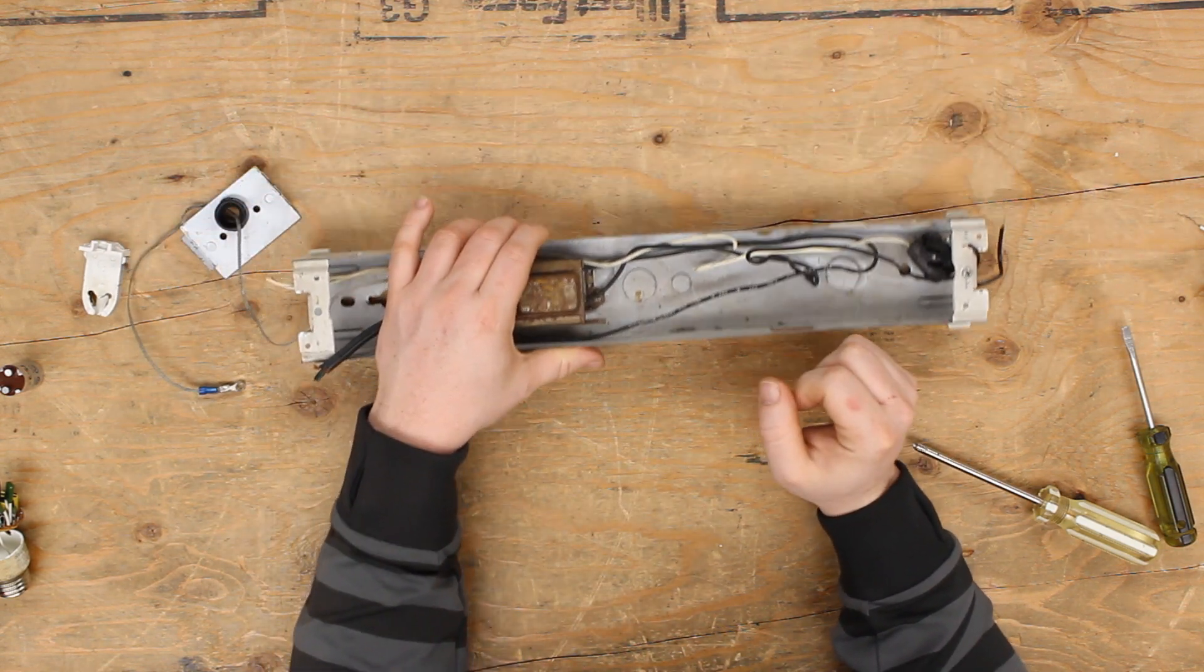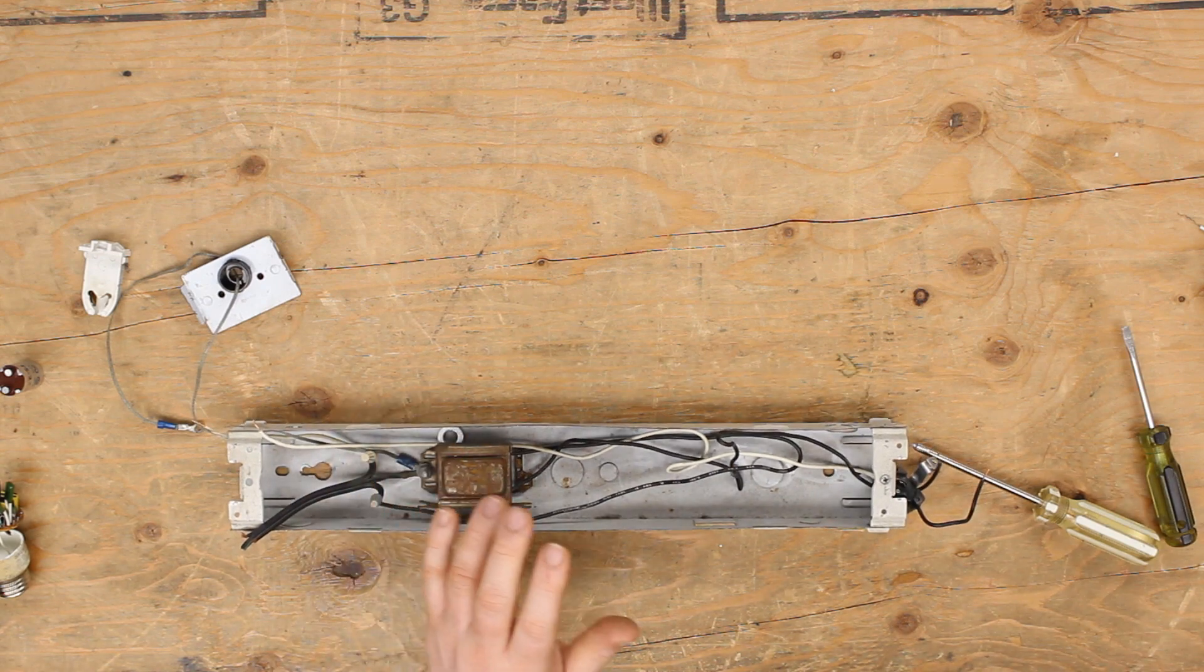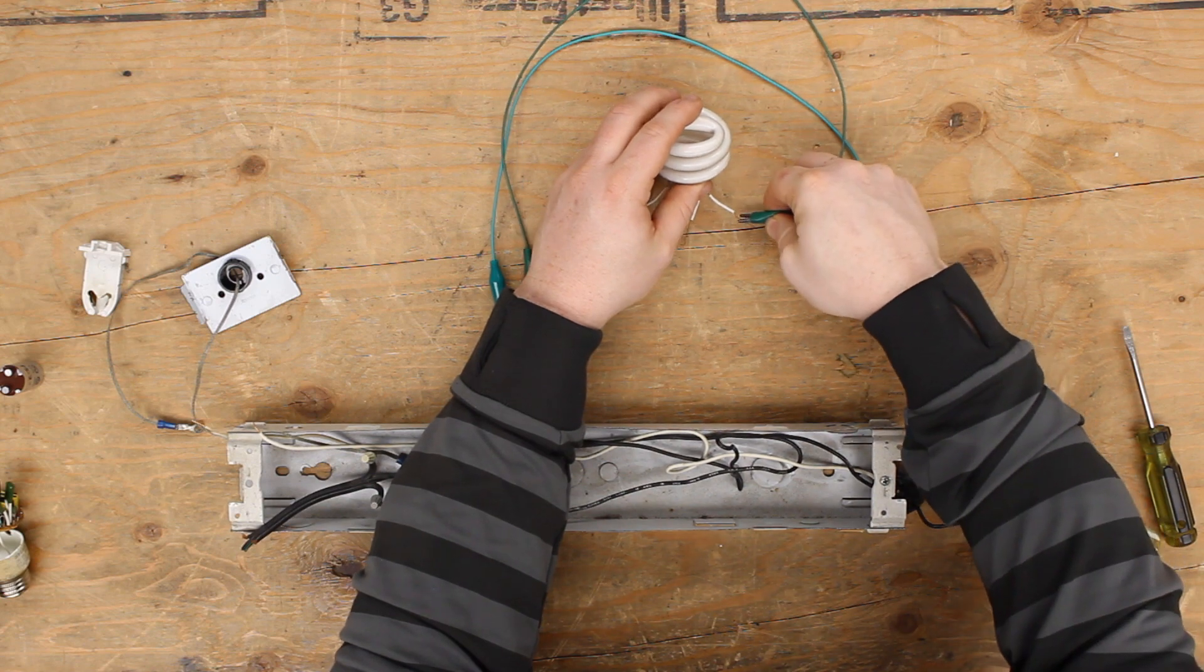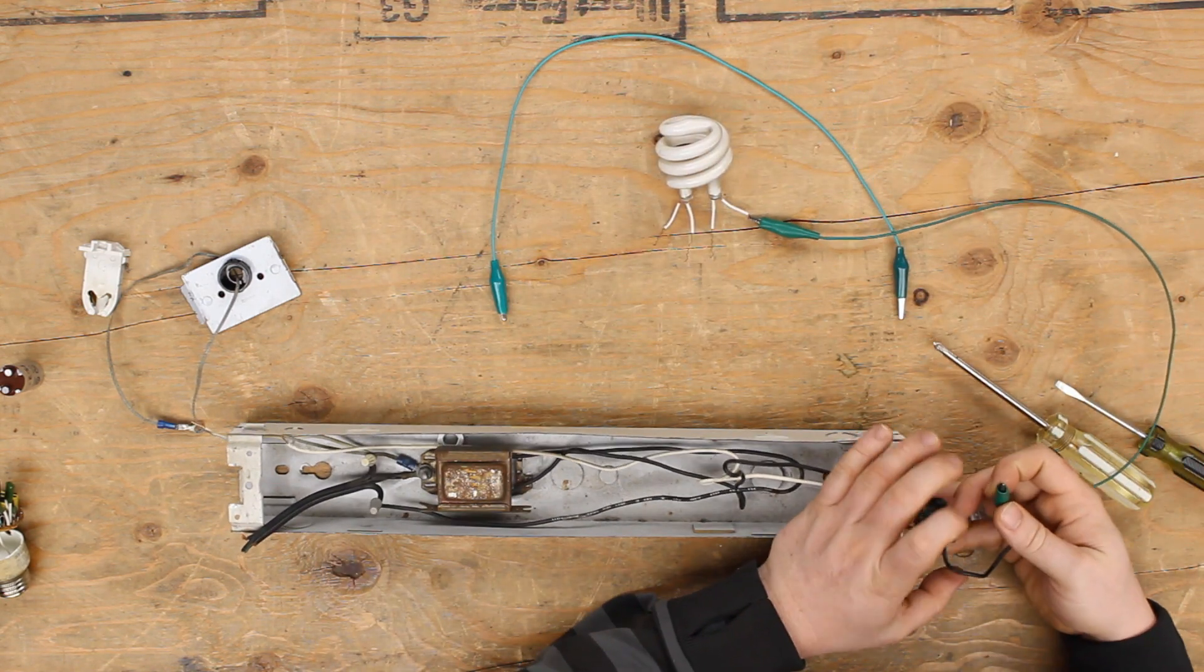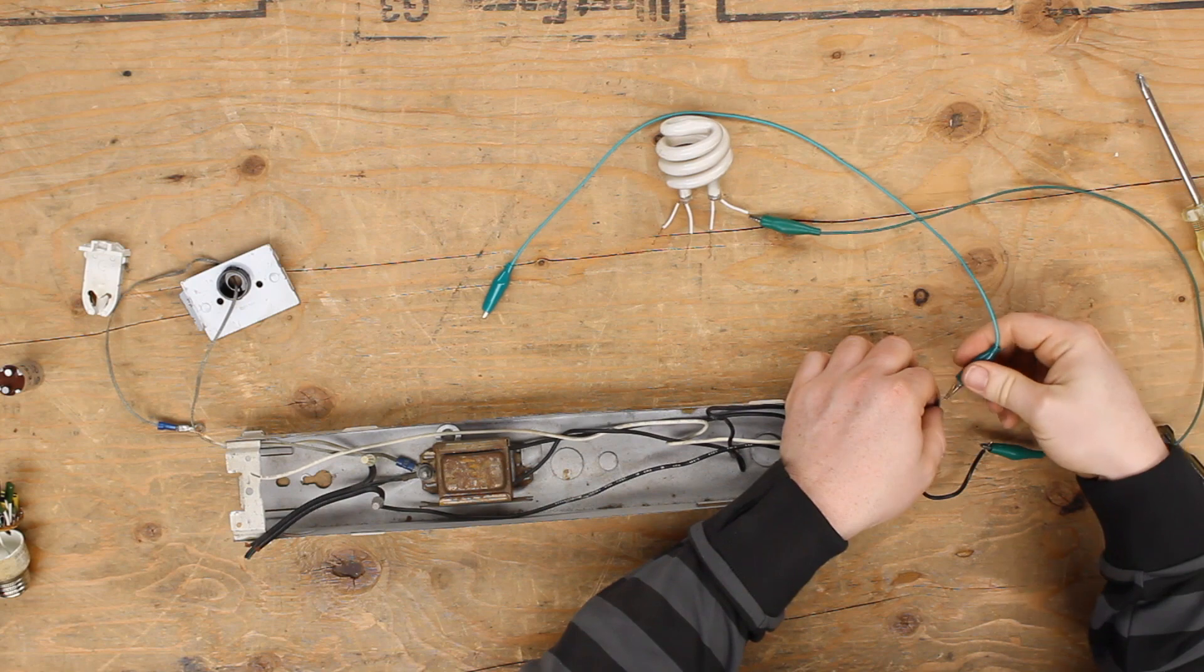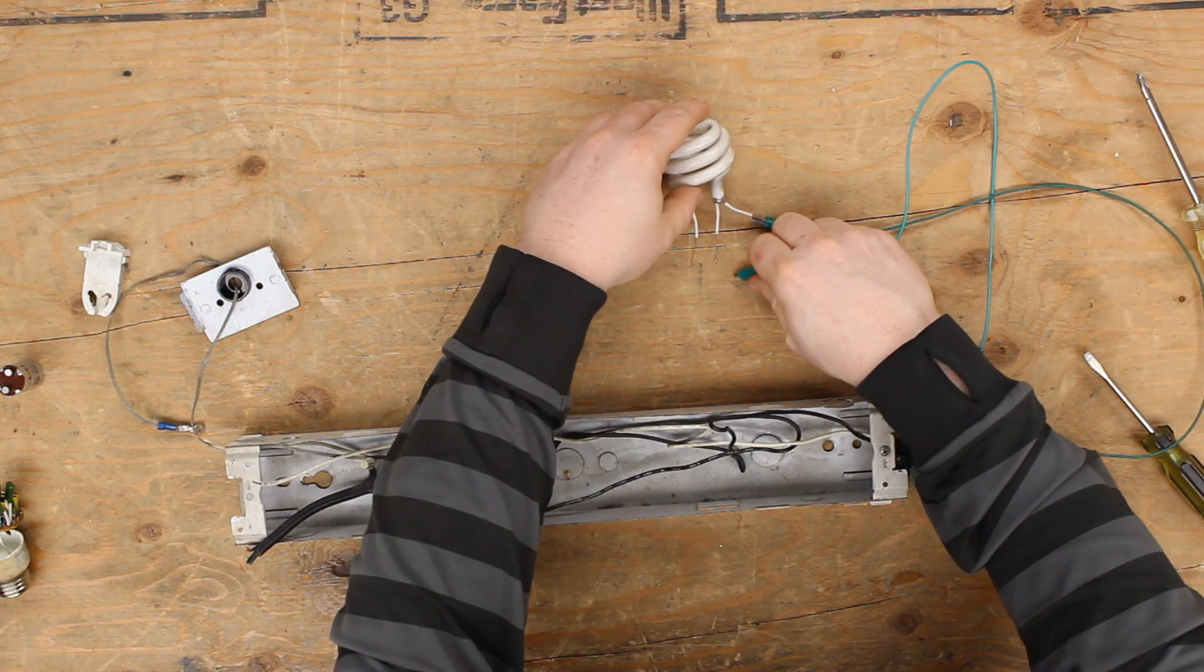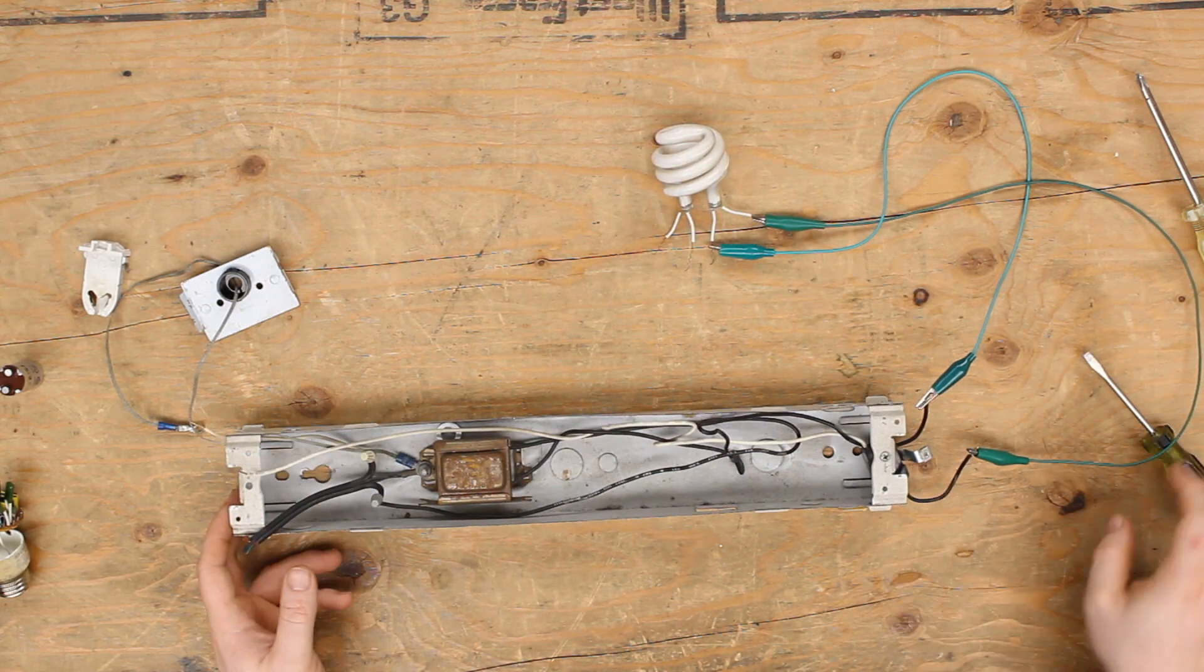So what I will do here is I will grab some alligator clips, and we're just simply replacing the socket ends on this and then wiring this up exactly like a regular fluorescent tube.